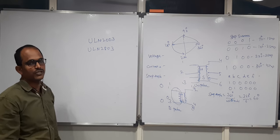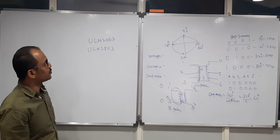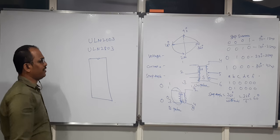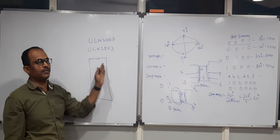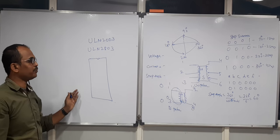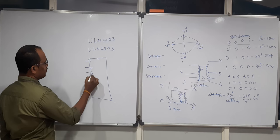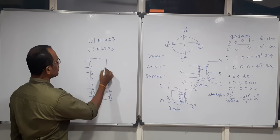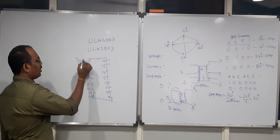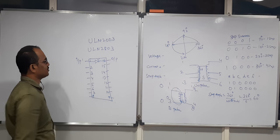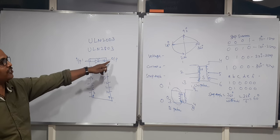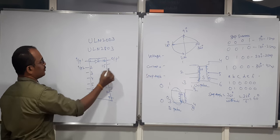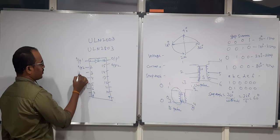The driving capacity of ULN driver ICs is from 5 to 12 volts at 1 ampere. The ULN2003 provides 7 inputs and 7 outputs across 16 pins, while the ULN2803 provides 8 inputs and 8 outputs. Each input-output pair acts as an inverter: logic 1 input gives 0 volts output, while the supply voltage appears at the output side. Input 1 maps to output 1, input 2 to output 2, and so on.